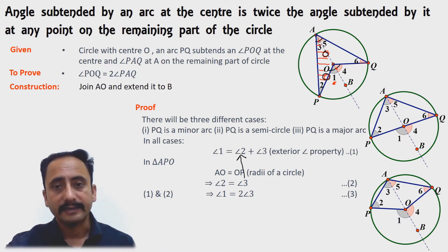Similarly, in the other triangle, that is triangle AOQ, we will have angle 4 equals twice angle 5.